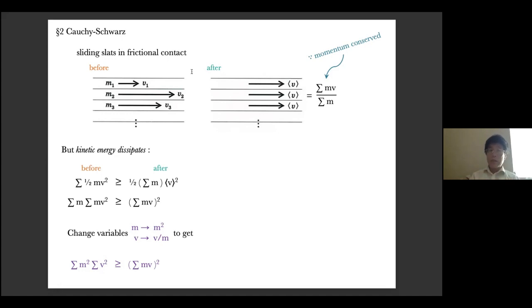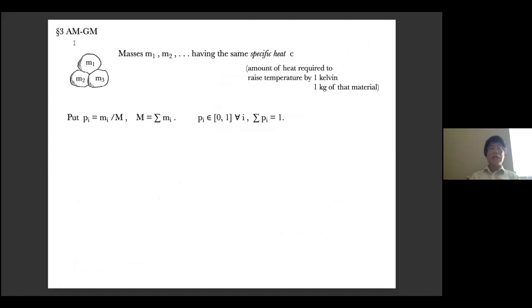But when we talk about an inequality, it's also interesting to discuss when the equality case takes place. Go back to physics. Equality means that there was no dispersion of energy. And what's the only scenario that leads to no dispersion of energy? Obviously, when all the slats are moving with the same speed to begin with. If there's any gradient of velocity, there will be friction and some energy will be lost. But that means V1 equals V2 equals V3 and so on. That was in the old variables. In the new variables, it says V1 over M1 equals V2 over M2 and so on. And this means that all the components of V as a vector and all the components of M as vector are proportional. And that's indeed the sharp case of Cauchy-Schwarz.